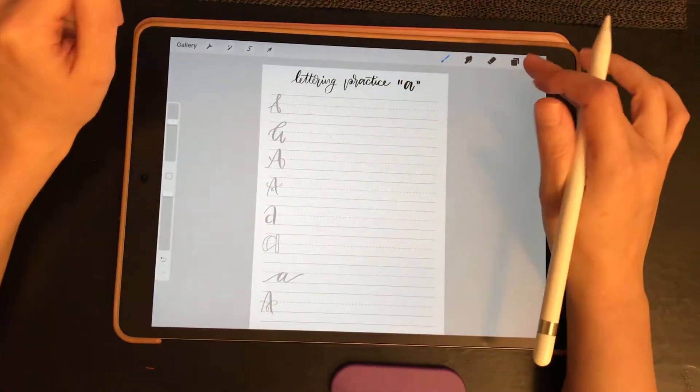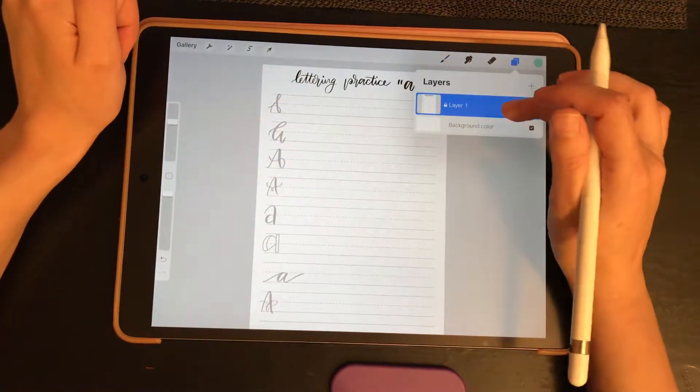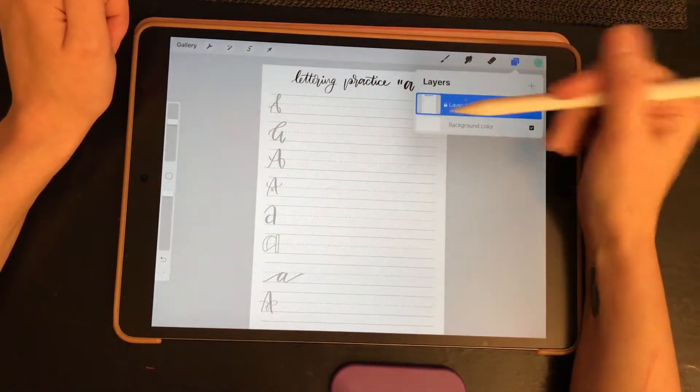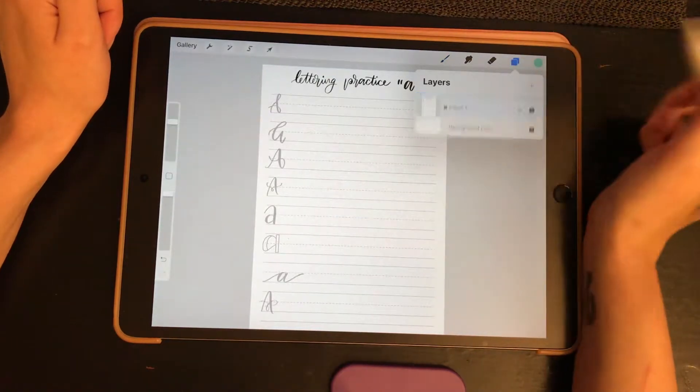If you are using Procreate, you can just download it right into Procreate or you can print it out if you don't have Procreate, either or. But if you are using Procreate, you want to make sure when you come in that the page itself is locked so you cannot write on it.